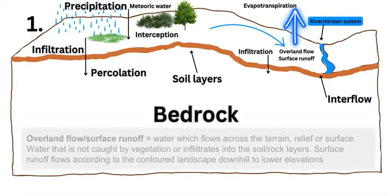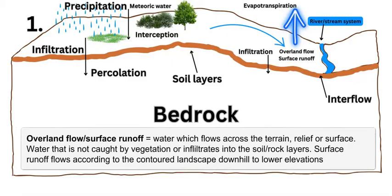Then we have overland flow and surface runoff. This is where the water is not going to enter the soil and bedrock, but instead flows over the Earth's surface via contours, elevation, gradients, and slope down to the lowest point where there is usually some collection of water — a puddle, lake, river system, or stream system.